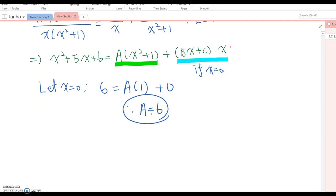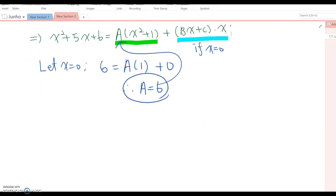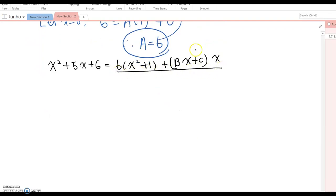Now, since there's no other value we can input in this equation, I'm going to replace 6 into A and then expand and combine the right term. So now this becomes x squared plus 5x plus 6 equal to 6 times x squared plus 1 plus bx plus c times x. Let's expand the right side expression. Then this becomes 6x squared plus 6 plus bx squared plus c times x.